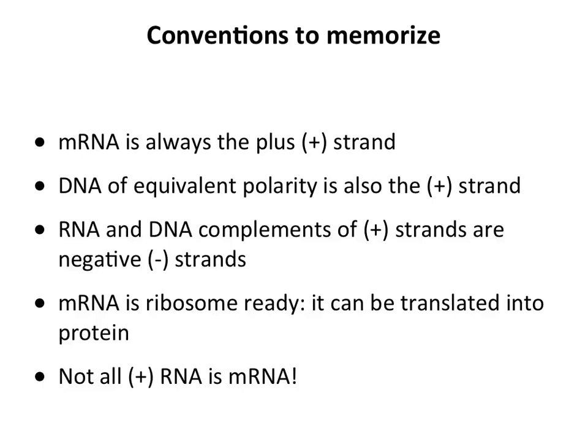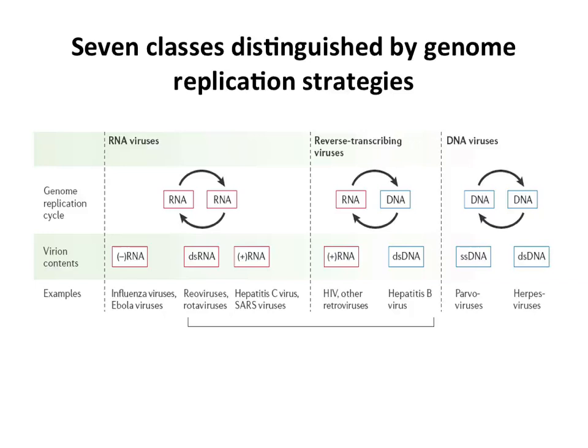Not all plus RNA is mRNA, because some viruses have a plus-strand RNA genome that is not translated into protein. So you can't always assume that just because something is plus it will be messenger RNA — but mRNA is always the plus strand. I will point out exceptions as we go through these genome types.